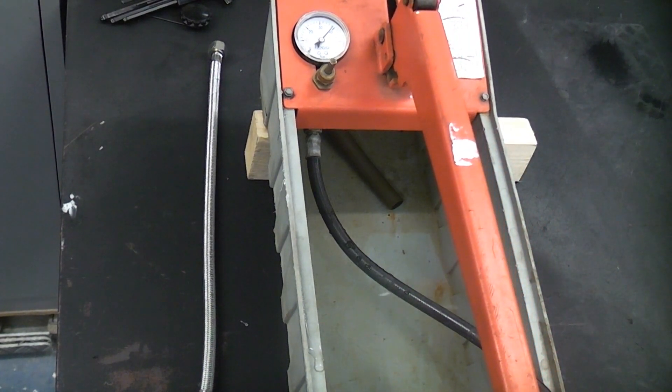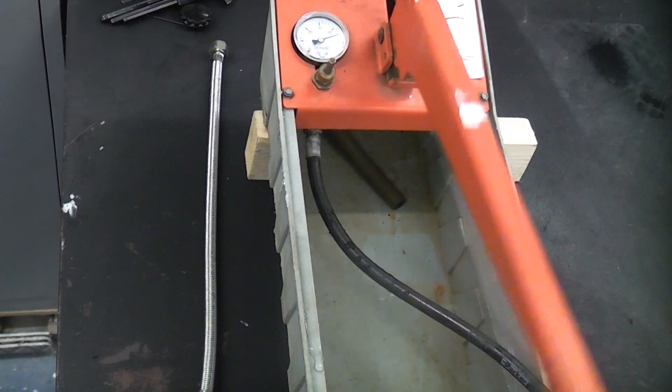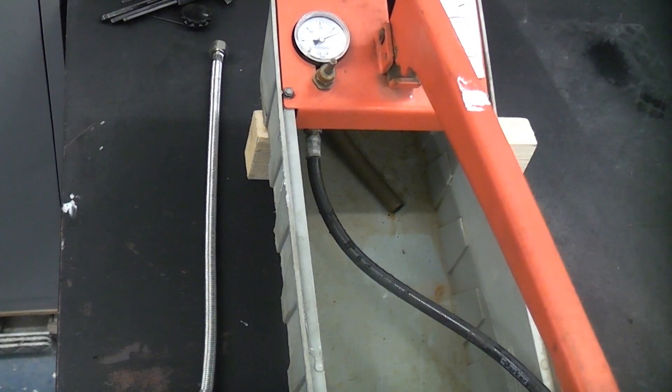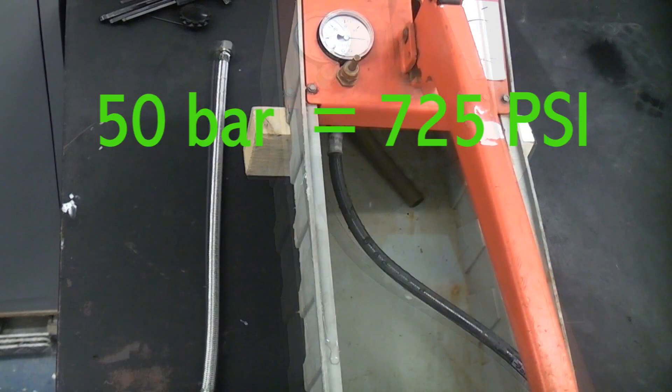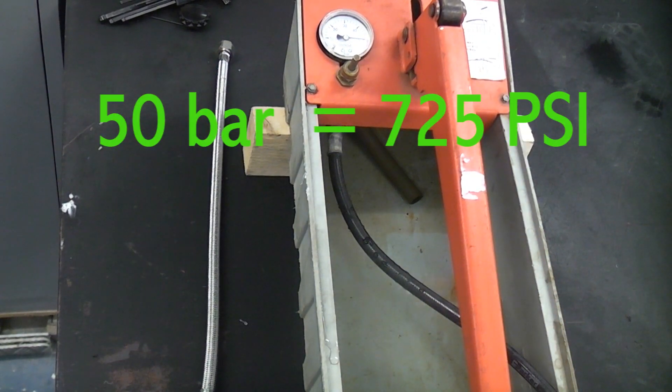Let's see if we can take it a bit further. This machine will go up to about 50 bar. So you can see that now has 50 bar of pressure in it, which is about 725 psi.